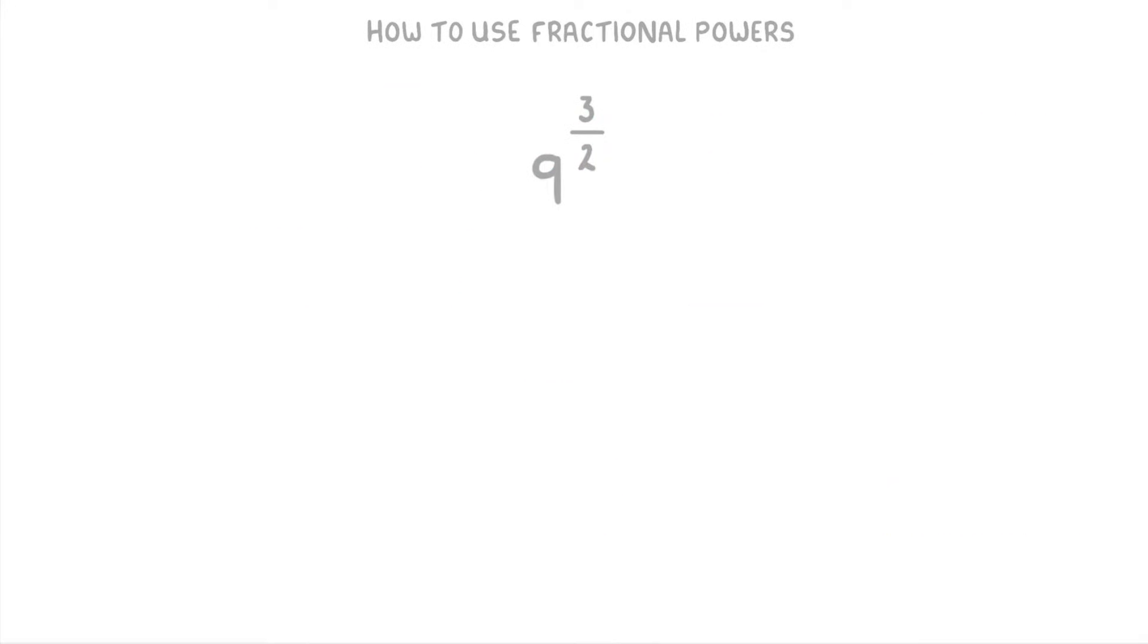So overall, when I see 9 to the power of 3 over 2, I'd rewrite it as the square root of 9 all cubed, so that I could simplify the square root of 9 to 3. Then I'm left with 3 cubed, which is 27.